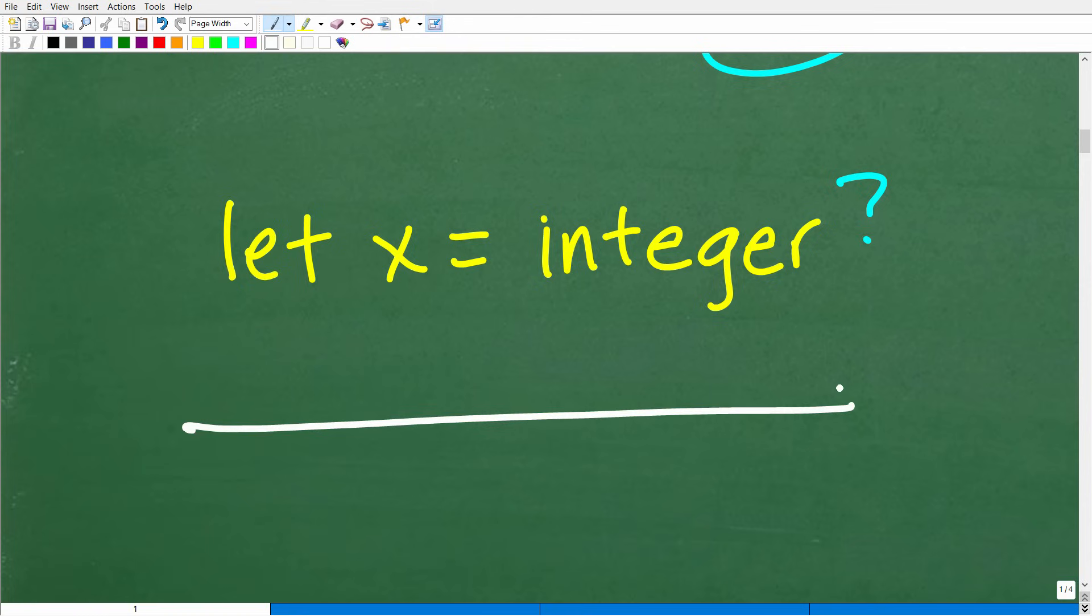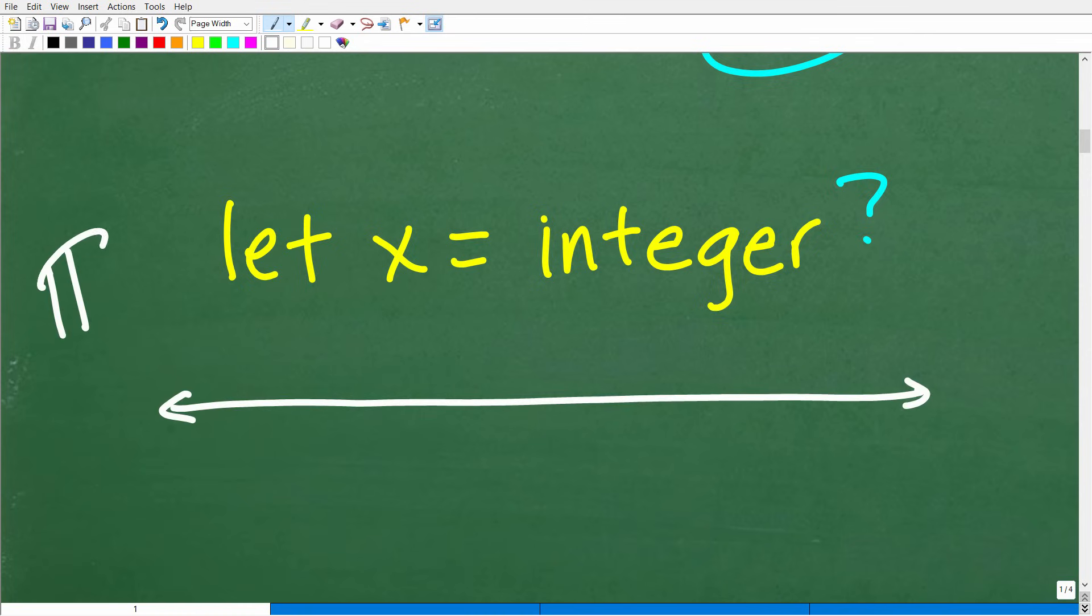On a real number line, here is zero. I'm going to do a quick, fast review because this is really important as well. Here is the real number line.